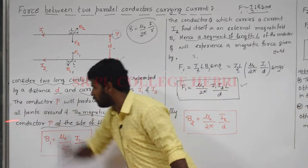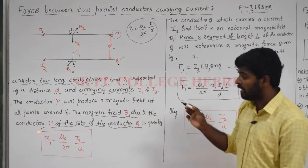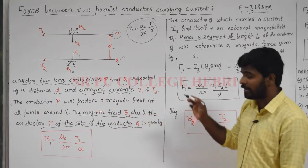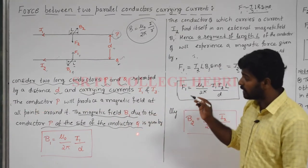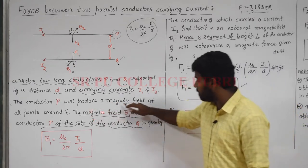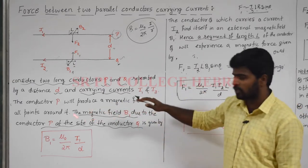Similarly, we now consider B2. Instead of conductor P, we now take conductor Q: conductor Q will produce a magnetic field at all the points around it.